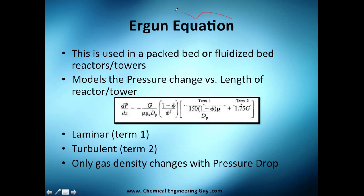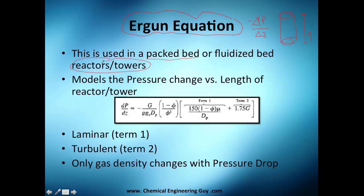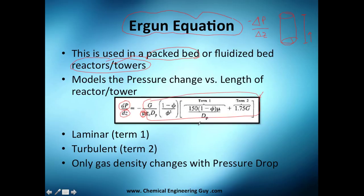The answer to modeling pressure drop is the Ergun equation. This is how we model pressure drop along the length of a reactor or tower — as you advance further, you have more pressure drop. It is typically used in packed bed reactors, fluidized bed reactors, and towers. The model gives the differential pressure with respect to length of the reactor. The full equation is large, but the only thing that changes with conversion is the density term — everything else is essentially a constant.